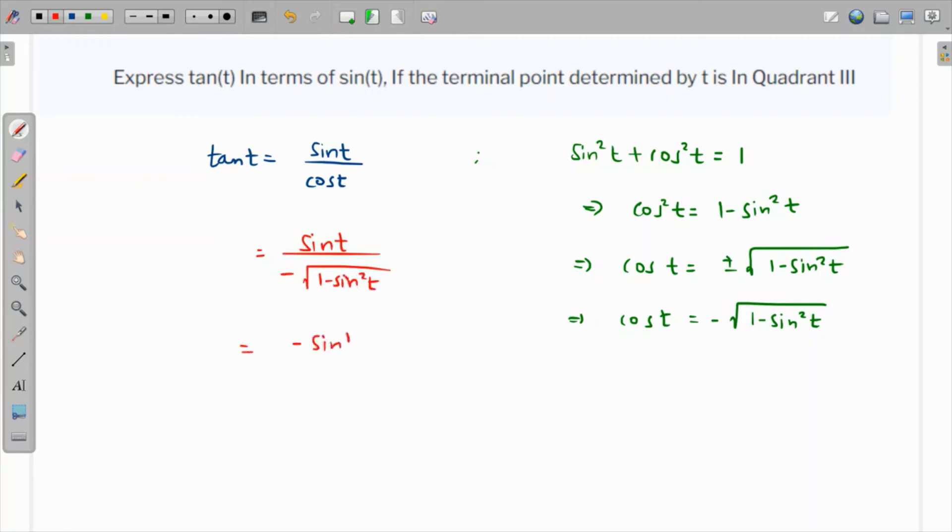So the final answer comes out as sin(t) over negative square root of 1 - sin²t. In other words, this is nothing but -sin(t) over square root of 1 - sin²t. This is the value of tan(t).